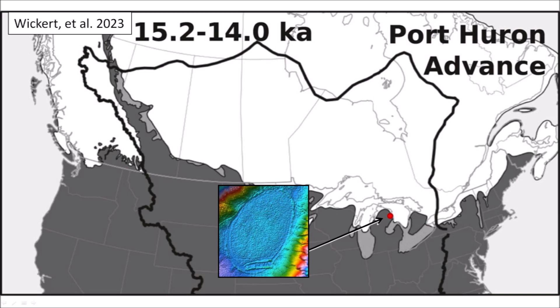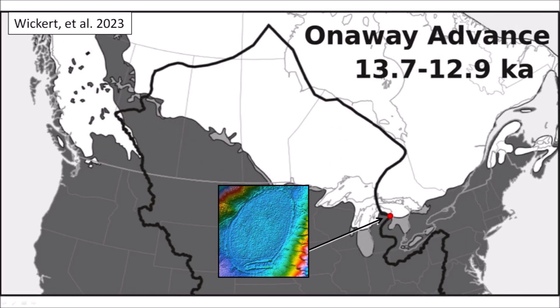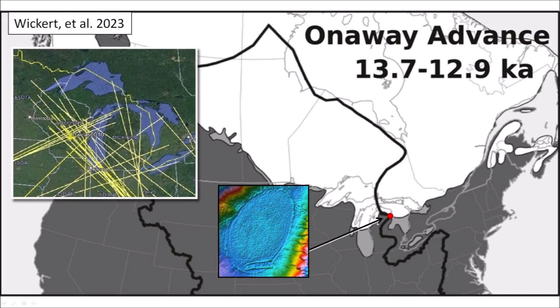The Port Huron Advance covered the Great Lakes with ice, except for the southern portion of Lake Michigan. The northern part of the Michigan Peninsula was covered with ice, so it is doubtful that the basin could have formed then. During the Two Creeks retreat, only Lake Superior was completely covered with ice, but the whole Michigan Peninsula was free of ice. The basin could have formed as early as 14,000 years ago. The Onaway Advance kept Lake Superior and the northern parts of Lake Michigan and Lake Huron covered with ice. The onset of the Younger Dryas was 12,900 years ago at the end of the Onaway Advance, and the elliptical basin could have formed at this time. The ice coverage of the Michigan Peninsula has helped us determine that the elliptical basin could have formed from about 14,000 to 12,900 years ago. But due to the large energy of the impacts that formed the basins, the most likely time must be associated with an ecological cataclysm such as the extinction of the megafauna and the disappearance of the Clovis culture.